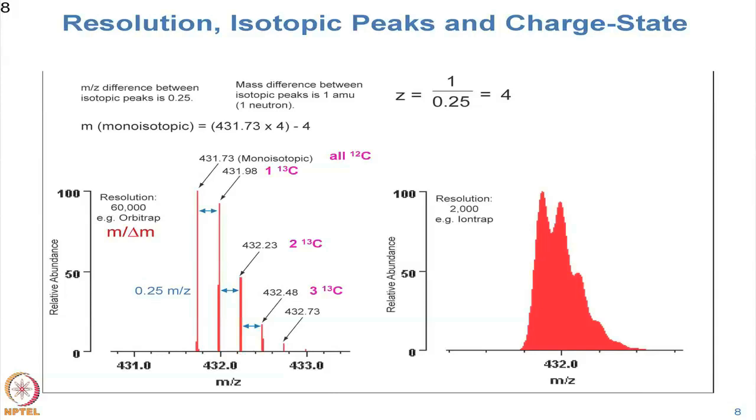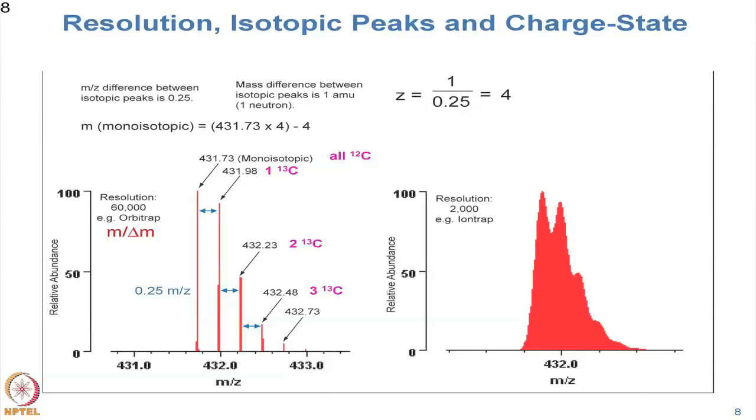Once you have isotope patterns, there is valuable extra information encoded in them. Since the mass of a neutron is approximately 1 but we measure mass-to-charge ratio (M/Z), if the isotope spacing is 0.25, that means the charge is 4. We can determine the charge state directly from that isotope spacing. On a high-resolution instrument, a typical resolution value for an MS-1 scan on an Orbitrap instrument is 60,000, defined as M divided by delta-M — the mass divided by the peak width.